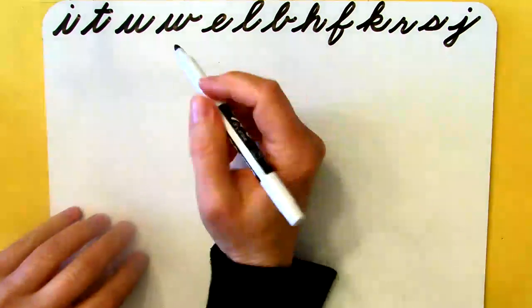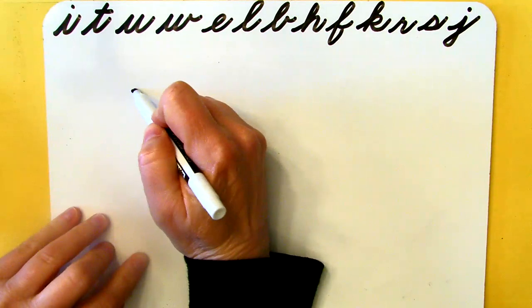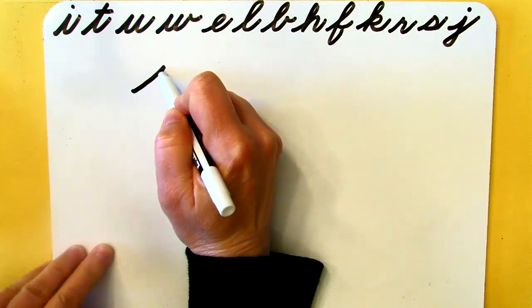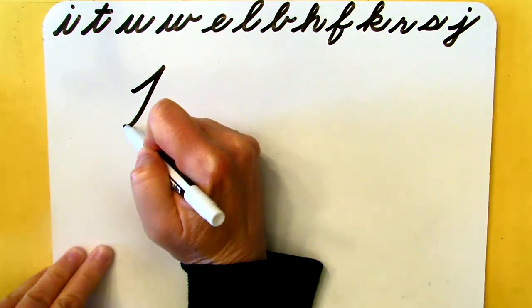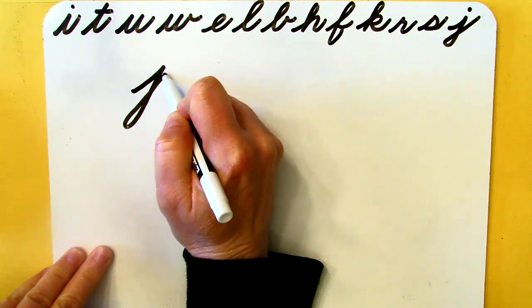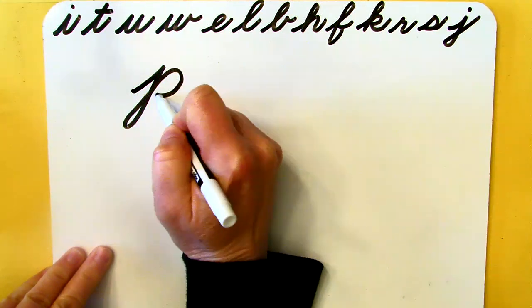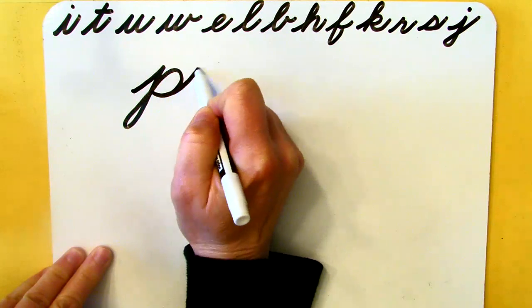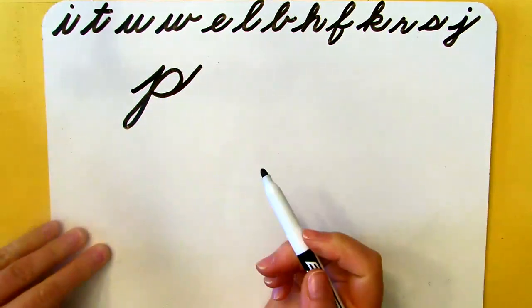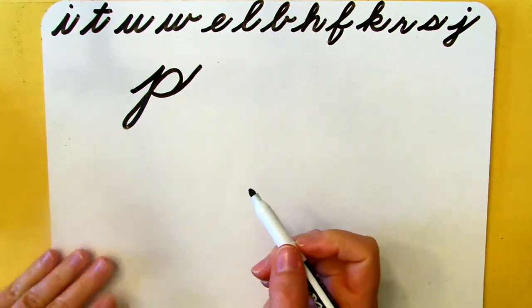It starts just like a J. Undercurve, slants to the basement, loop back, and then it's up and over curve, and then another undercurve. That is your lowercase P. Watch again. It's got a lot of strokes.